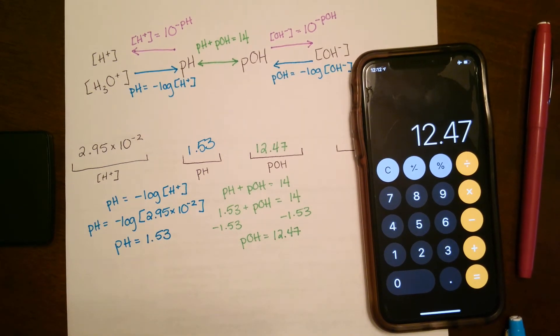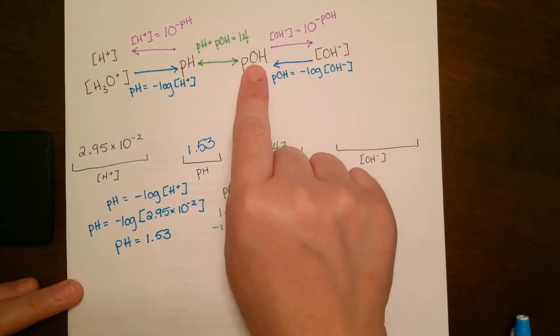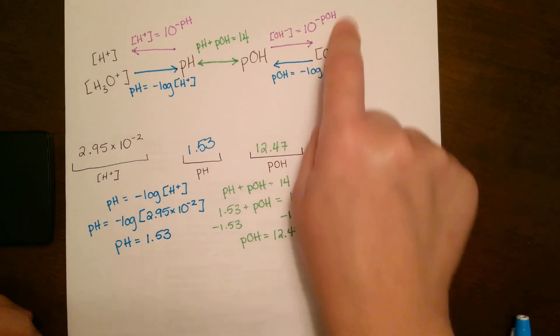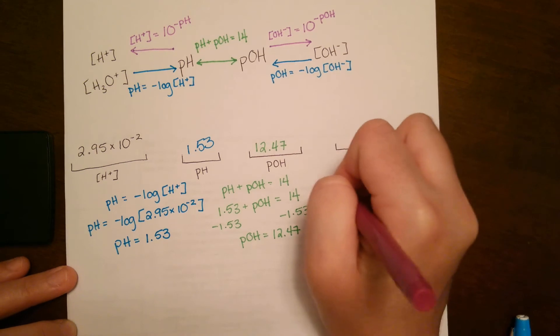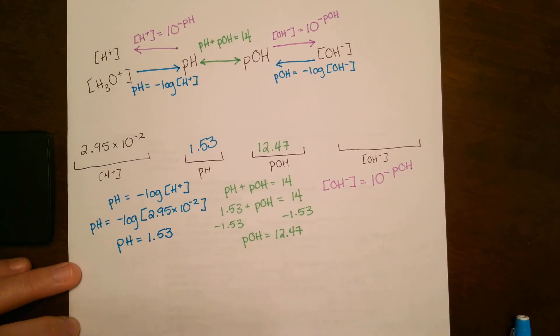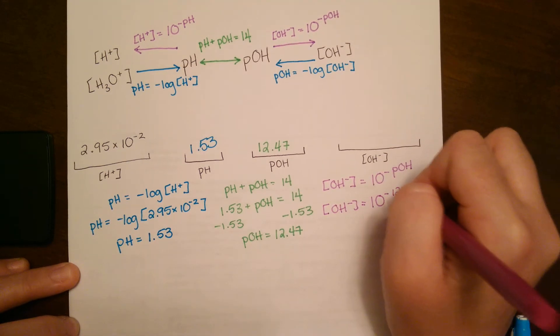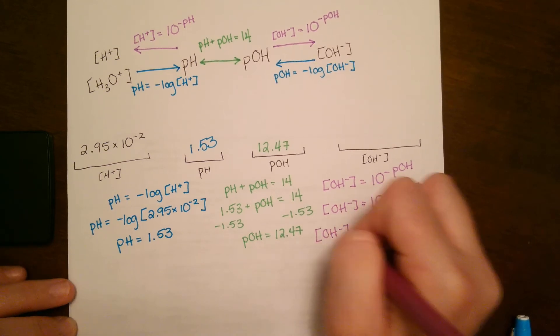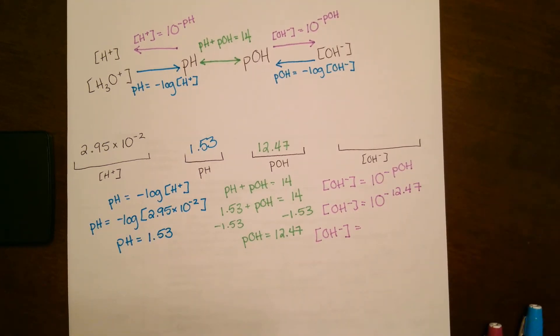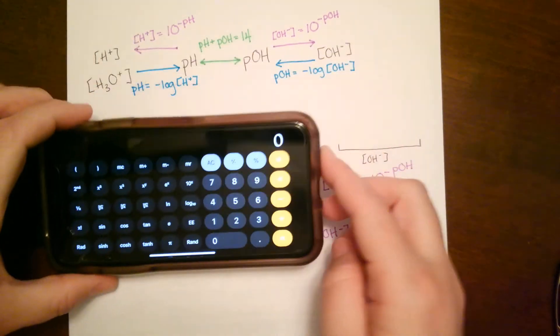So for our next part, we see that we're moving from pOH to hydroxide. So check the arrow for the one that's moving out. So here's our equation for that. We're going to say OH- is equal to 10 to the power of negative pOH. So for that, we found our pOH to be 12.47. So for this one, again, you can have your normal calculator like so. You're going to need to turn it horizontally once again so that you have that scientific calculator.